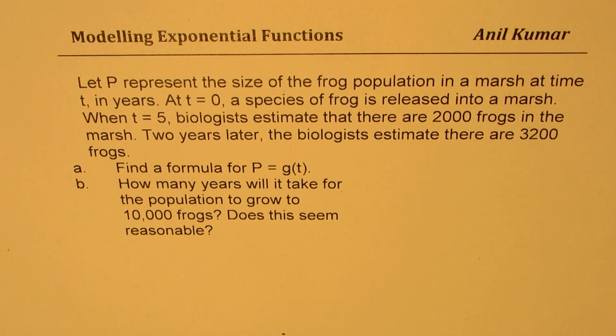Let P represent the size of the frog population in a marsh at time t in years. At t equals 0, a species of frog is released into a marsh. When t equals 5, biologists estimate that there are 2,000 frogs in the marsh. Two years later, the biologists estimate there are 3,200 frogs.